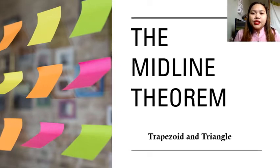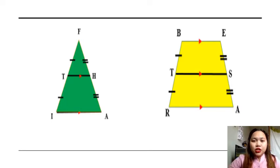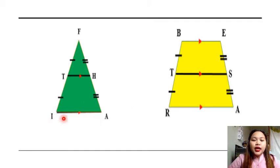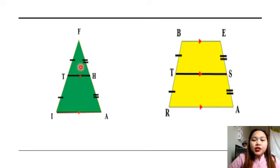To give us a short preview on what this topic will be all about, take a look at the two illustrations. The first image is a triangle. We have triangle IFA, and we have line segment TH. If you will notice, class, we also have different marks showing that some parts of it are congruent and parallel.